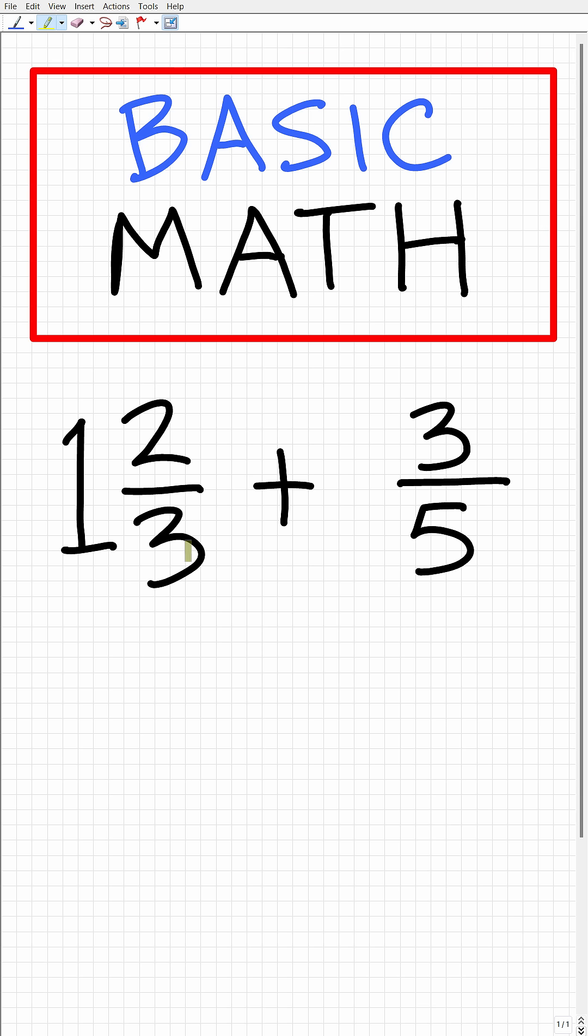So we have one and two thirds plus three fifths. All right, so how do we add these fractions?